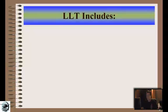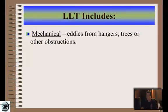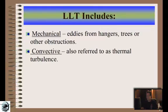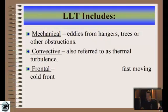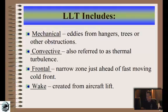Low-level turbulence includes mechanical eddies from hangers, trees, or other obstructions; convective, also referred to as thermal turbulence; frontal, a narrow zone just ahead of a fast-moving cold front; and wake, created from aircraft lift.